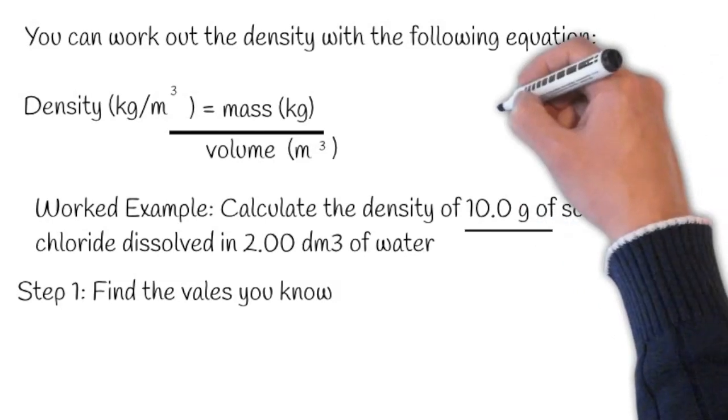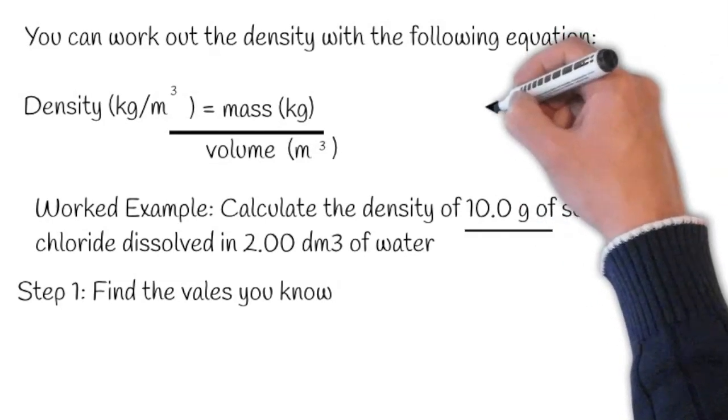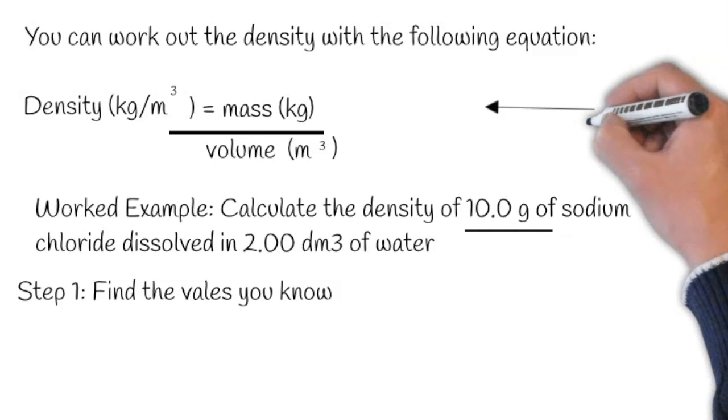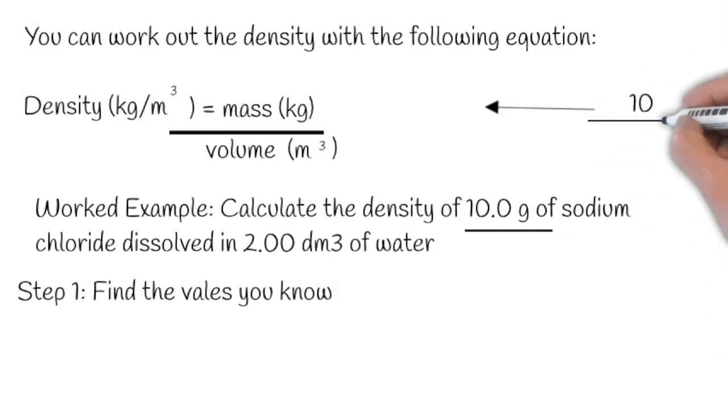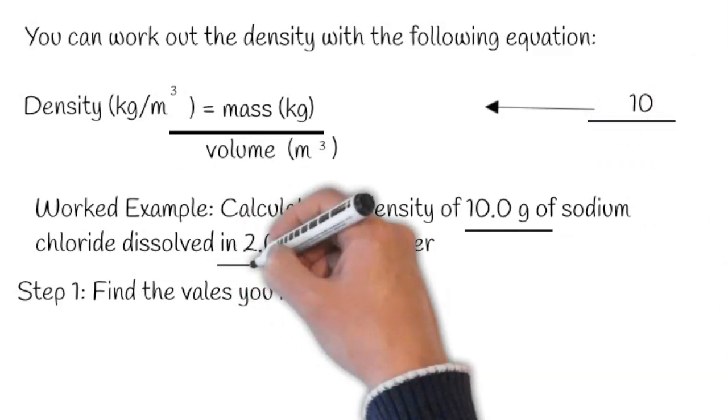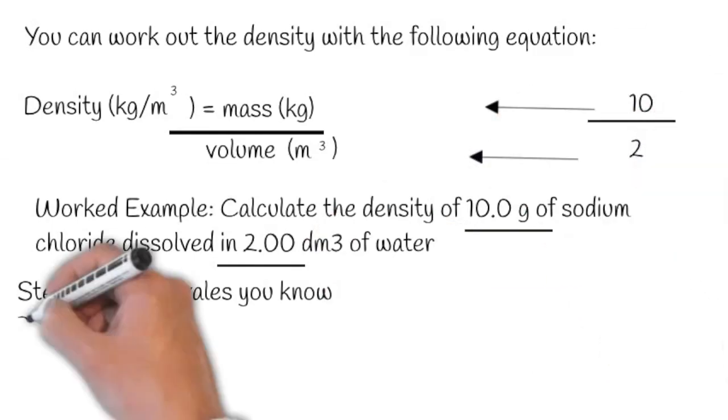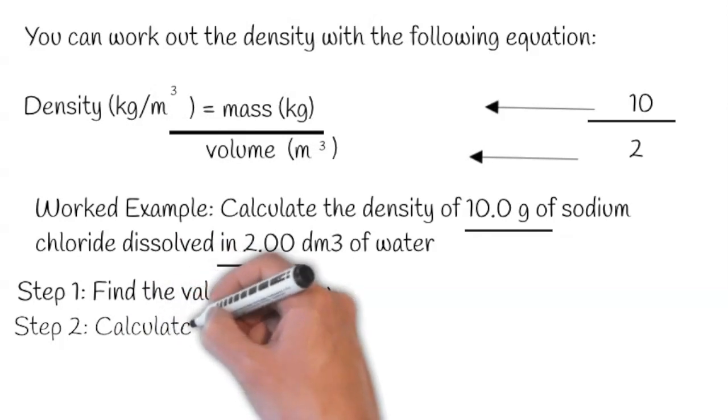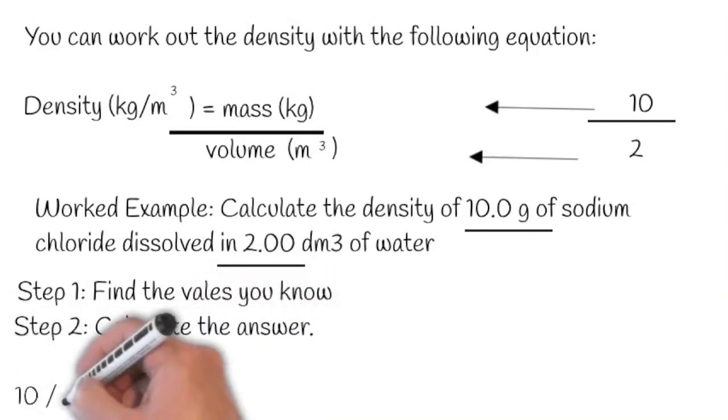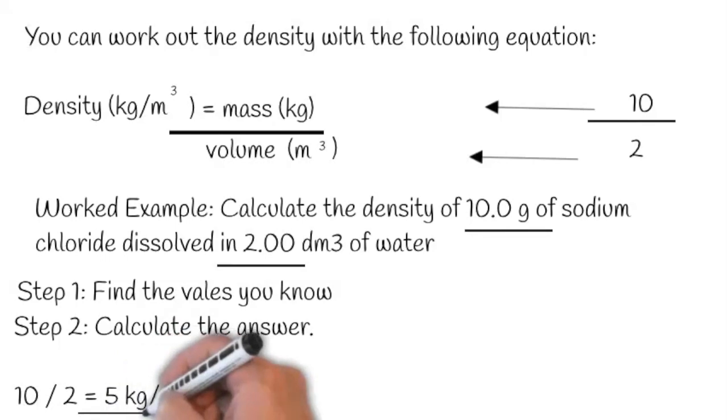The mass is 10 grams, so we'll write that here. This will be divided by the volume, which is 2 decimeters cubed, so we're going to write that underneath here. We can then calculate the answer, which is 10 divided by 2 equals 5 kilograms per meter cubed.